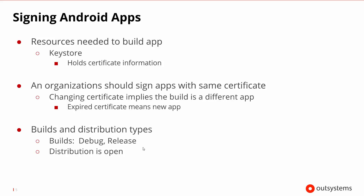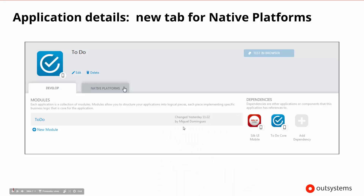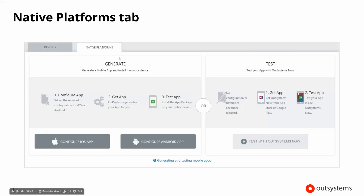These are some of the things we need to know to be able to generate native apps. There's a good bit of work and preparation, but once you do that and have the basic information, it is super easy to generate the native apps in OutSystems. We come into the application detail area, where by default we're placed on the development tab and can see our modules and dependencies. But there is a brand new native platforms tab for our mobile applications, and we go ahead and click on it, which jumps us into the basic generation tab.